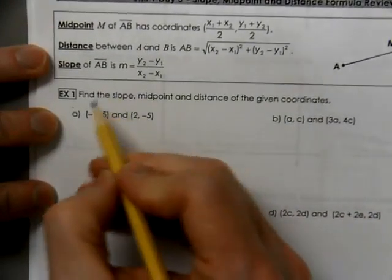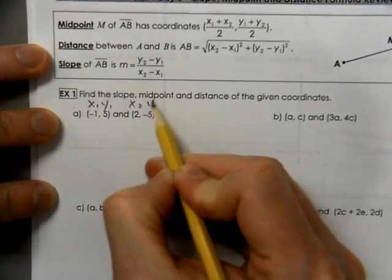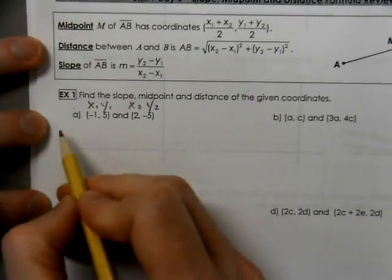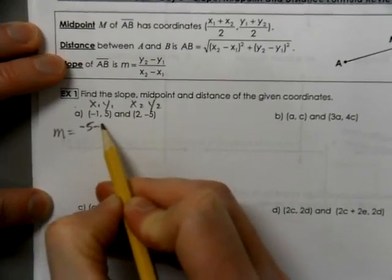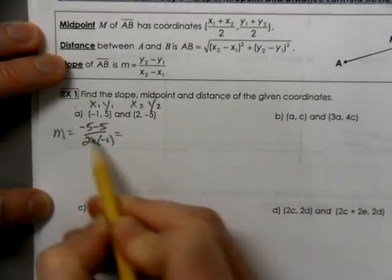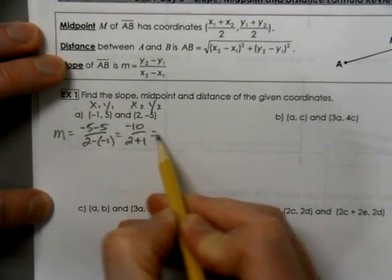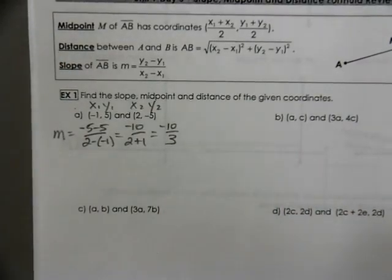So we'll come over and we'll first do our calculations with integers. So the slope is going to be negative 5 minus 5, and 2 minus a negative 1. That gives us negative 10 over 2 plus 1. So our slope is negative 10 over 3.